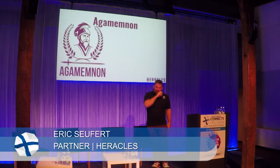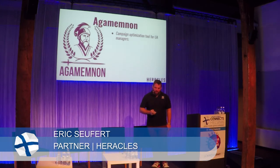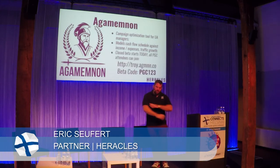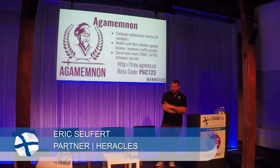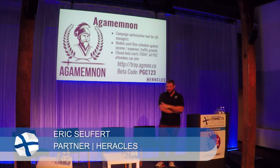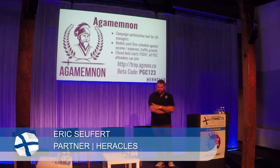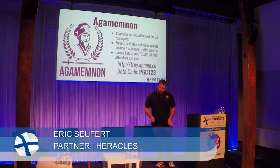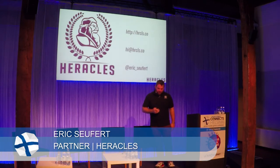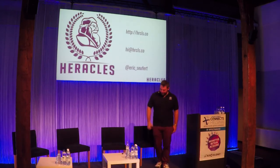I've been working on a tool for a few months called Agamemnon — it's a campaign optimization tool for UA managers that models cash flow schedule against income, expenses, and traffic growth. There's a closed beta starting today and I created a beta code for everyone here — 150 uses, it's free. It's super beta and buggy, but you should at least be able to open it. If you encounter any bugs please feel free to email them to me. That's the end of my talk — thank you.